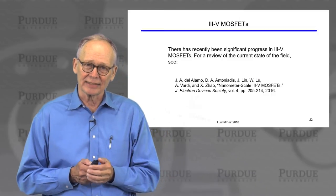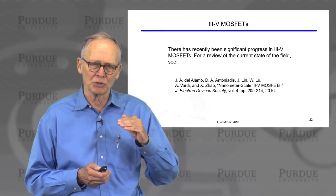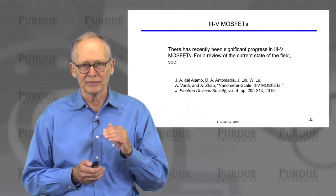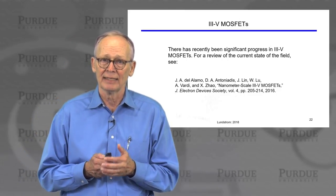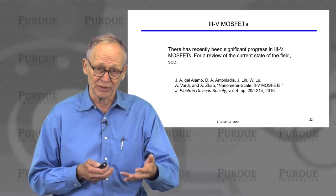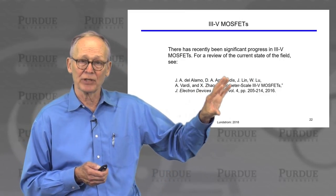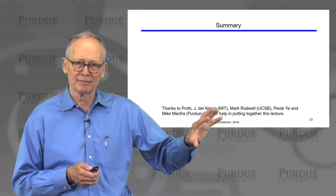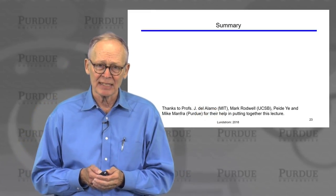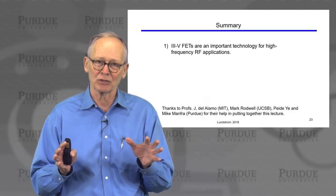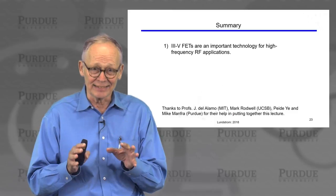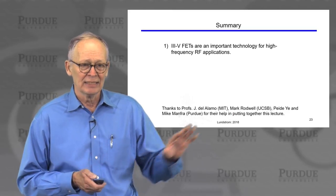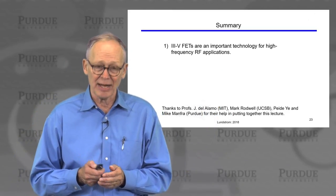Regarding 3-5 MOSFETs: there has been significant recent progress in growing insulating layers on 3-5 semiconductors like gallium arsenide with low enough interface-state densities to perform as high-quality MOS transistors. A reference paper is provided summarizing where that work stands. In summary, this lecture gave a quick look at the HEMT — an important technology for high-frequency RF applications that operates on the same barrier-controlled principles as the silicon MOSFET.